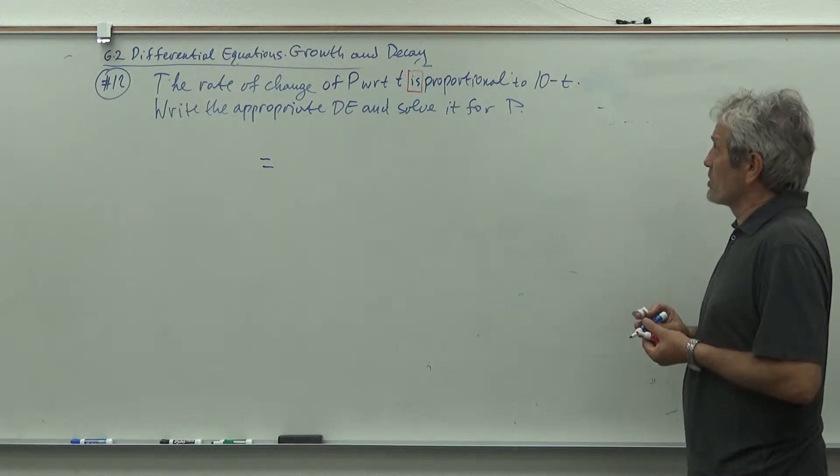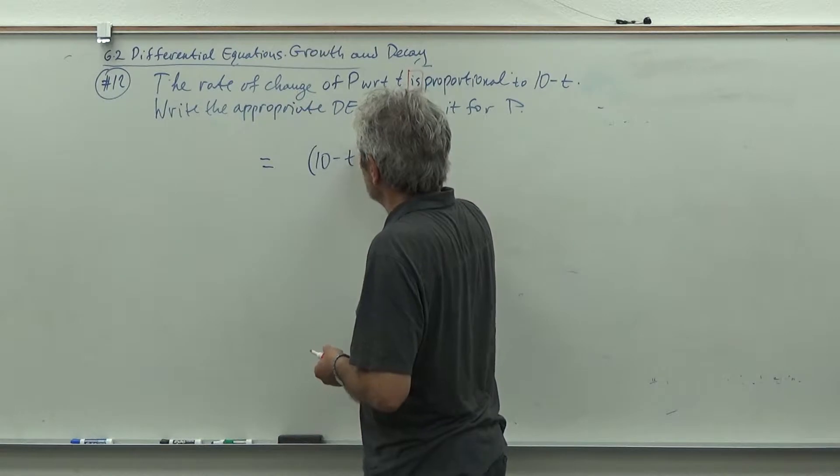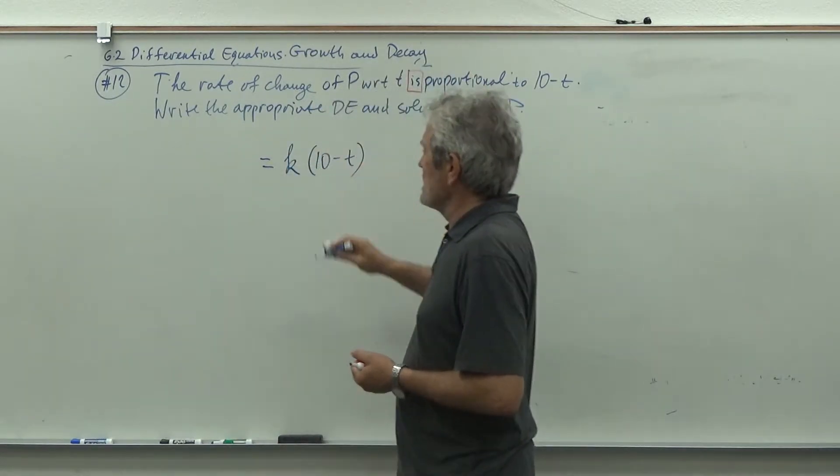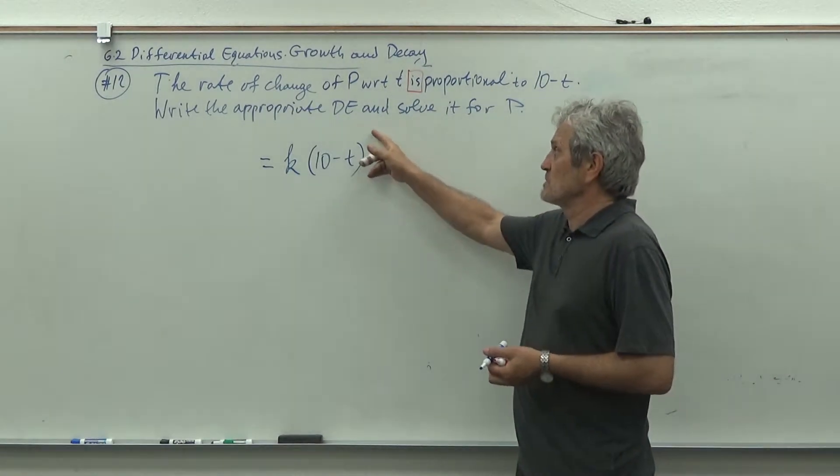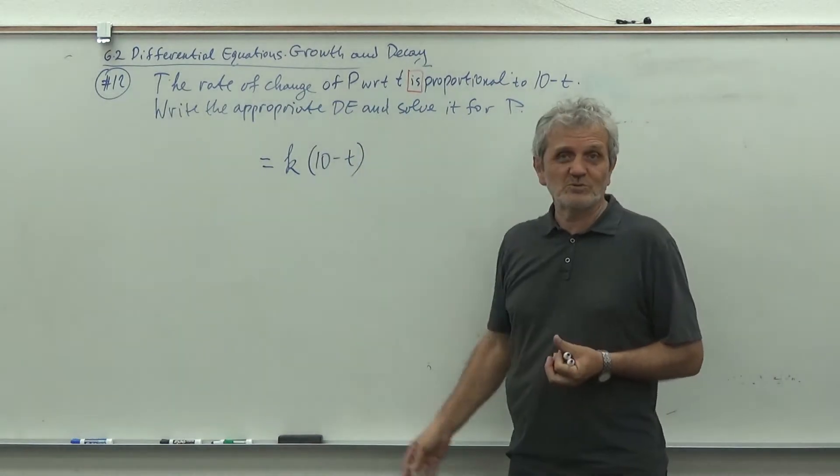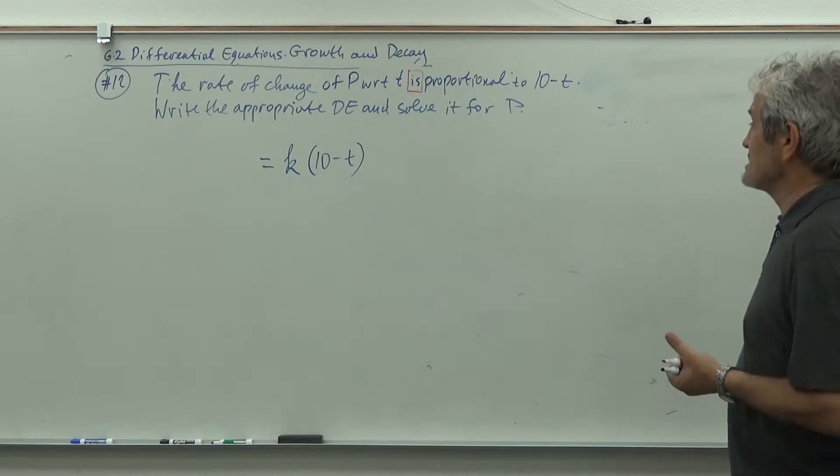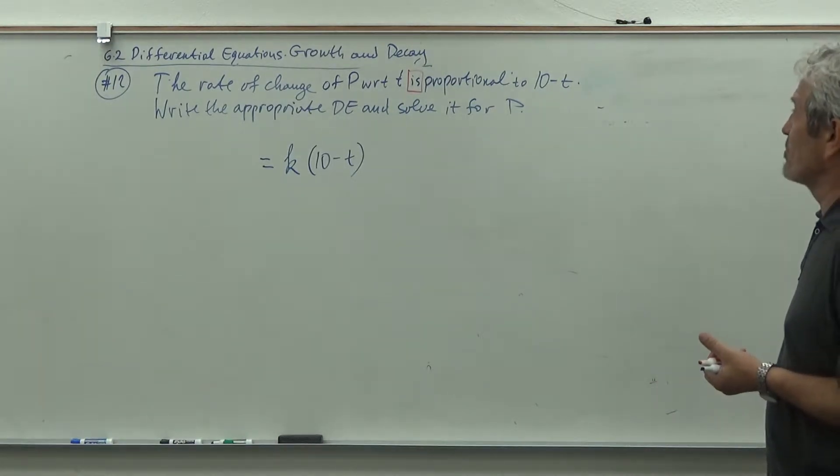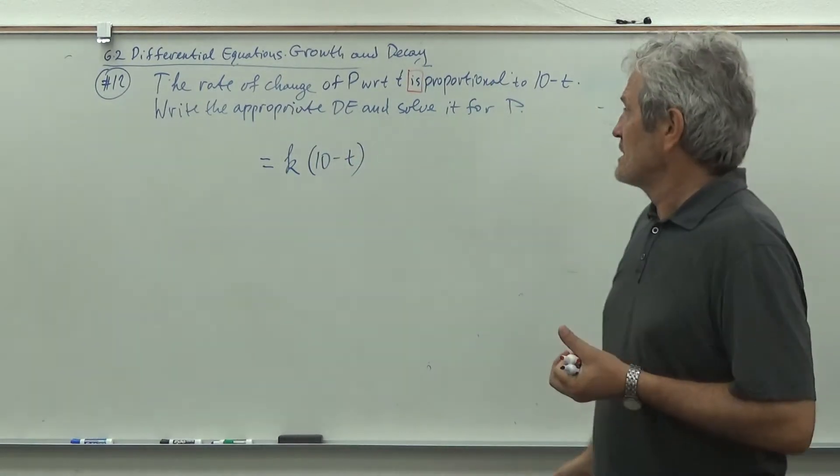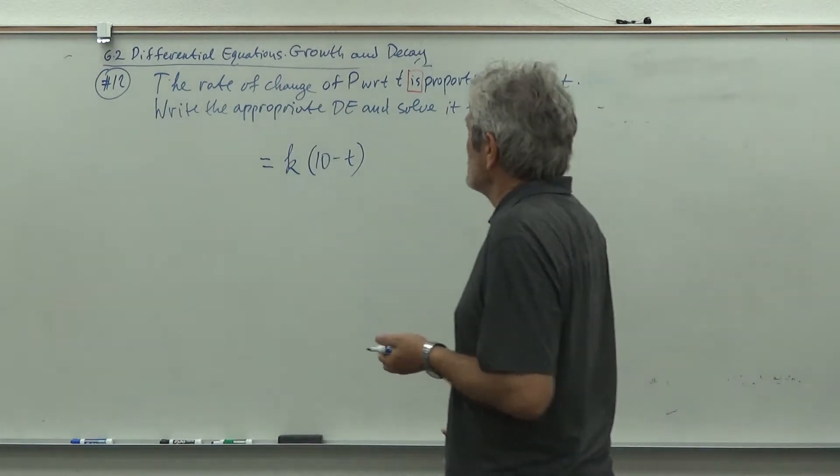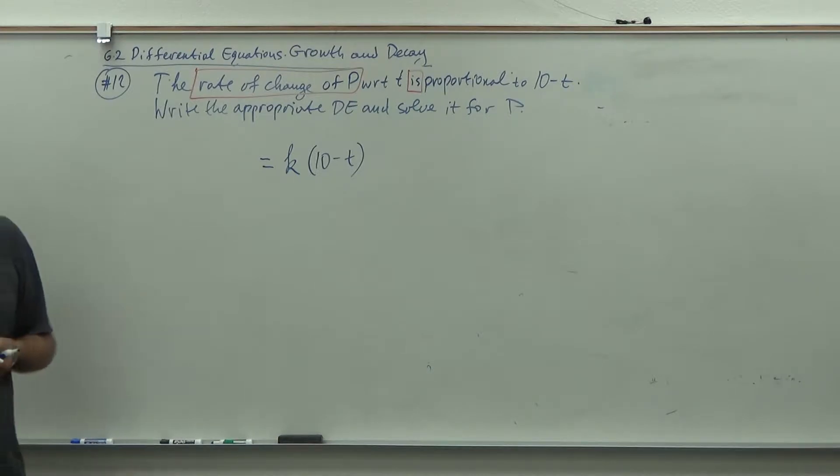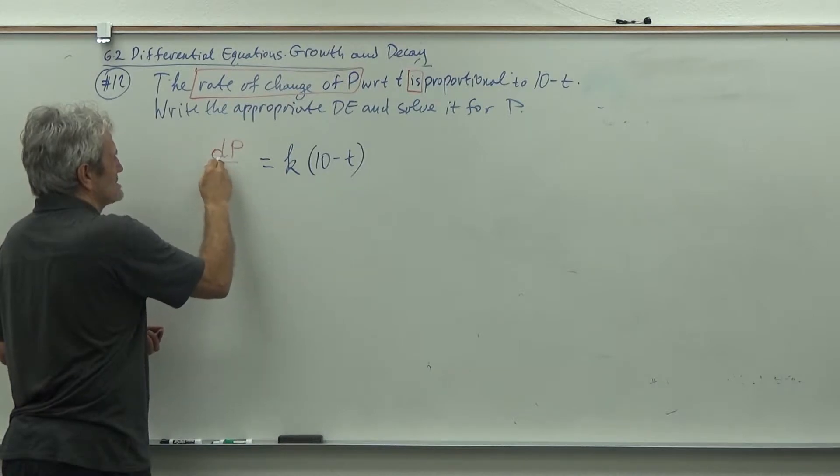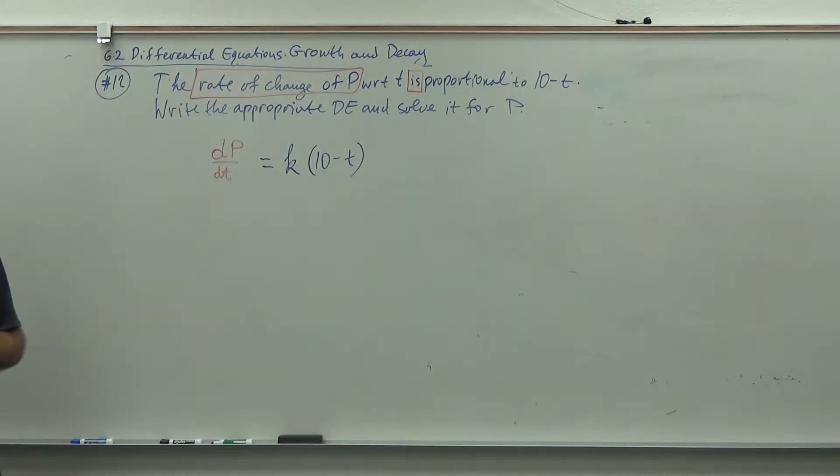This needs two skills from basic algebra and calculus one. Proportional to 10 minus T means put 10 minus T here and there is a constant of proportionality, that's k. So being proportional means being a multiple of 10 minus T. Sometimes they will say proportional to the square, so we put square here. Inversely proportional means you put it in denominator. That's the language from basic algebra where you record math sentences with the word proportional.